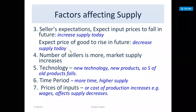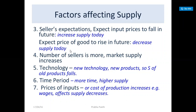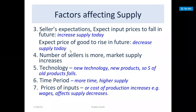Expecting input prices to fall in the future means his cost is going to decrease, so he may increase supply. If goods are perishable and going to be damaged, he will sell them immediately at whatever price. Number of sellers: more sellers in the market means market supply increases.